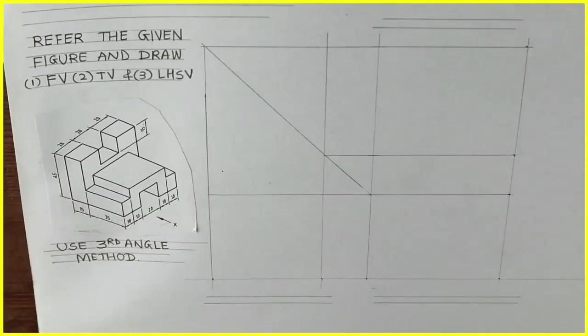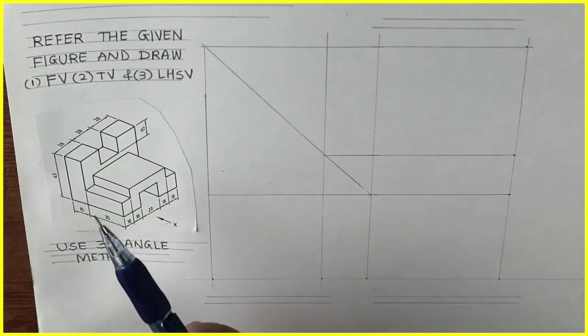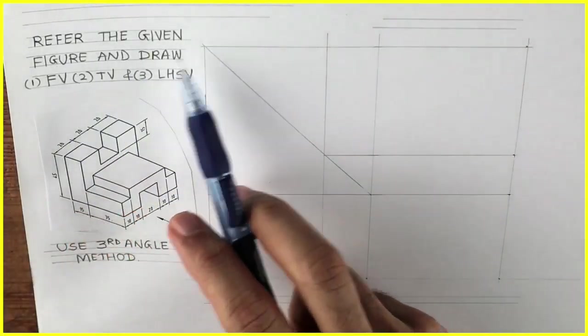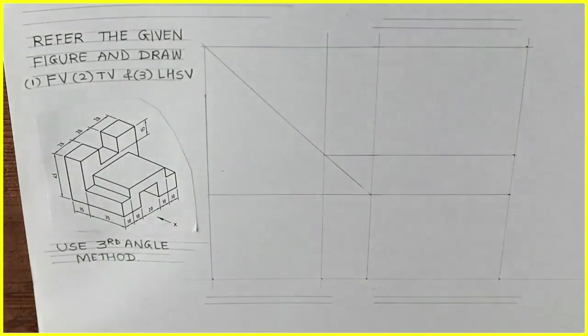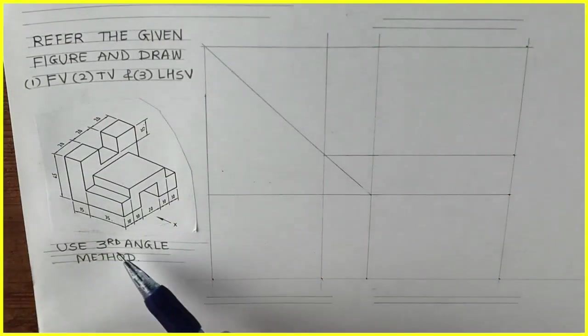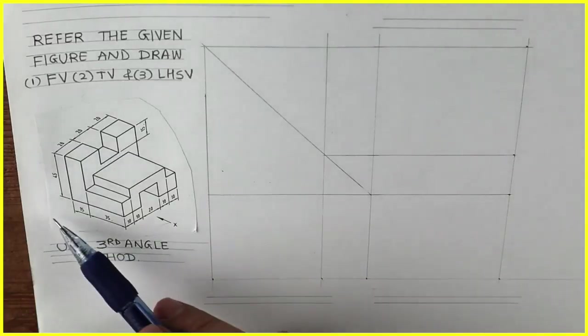Welcome to technical drawing. Today we'll draw orthographic views of this pictorial view. We need to draw front view, top view, and left hand side view in third angle method. When the observer sees from here, length is 60, width is 50, height is 45. First we will draw layout then the front view.